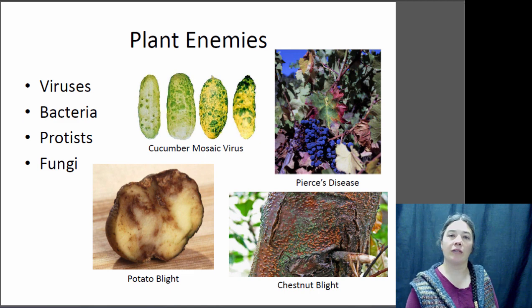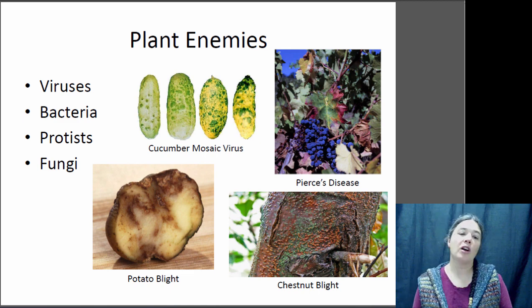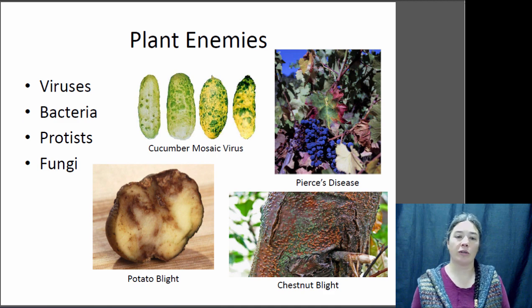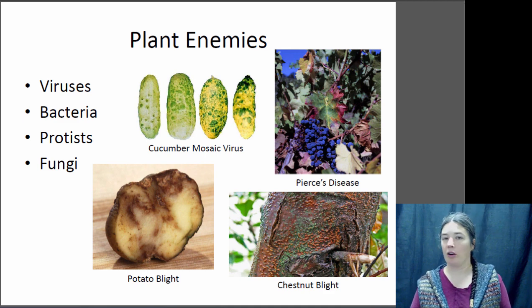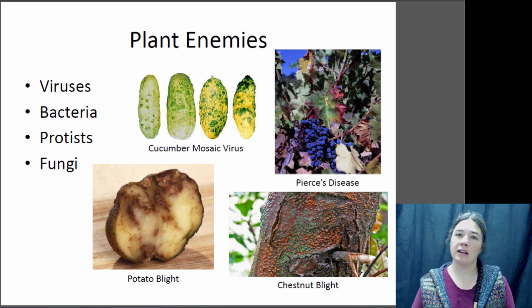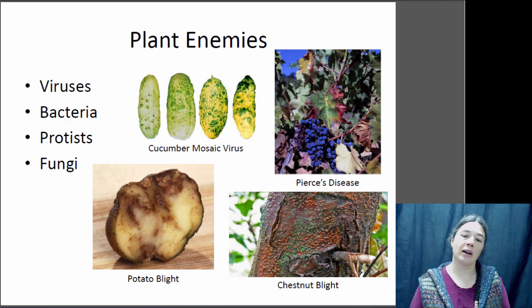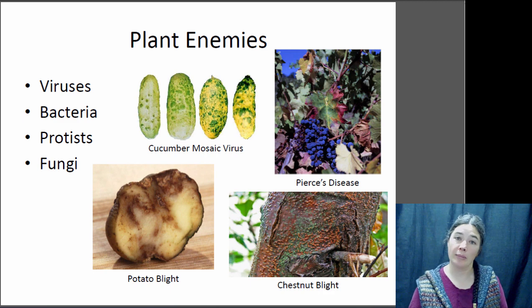I've given a few examples here of diseases that are caused by different pathogens. Cucumber mosaic virus results in these weird-shaped cucumbers — that's obviously caused by a virus. Pierce's disease is a disease in grapes that causes the grapes to wither on the vine. That's an infection by a bacteria that prevents xylem from getting to the grapes, so the grapes dehydrate.